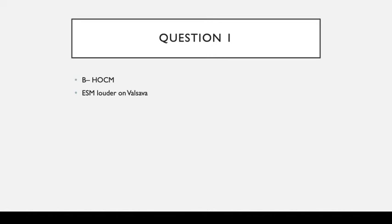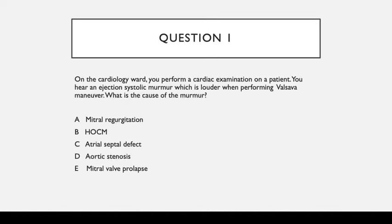The answer is B, HOCM. HOCM is an ejection systolic murmur that is louder on Valsalva. Mitral regurgitation is not an ejection systolic murmur. An atrial septal defect would give an ESM but with fixed split S2. For AS, it is quieter during Valsalva. Mitral valve prolapse is a late systolic murmur.